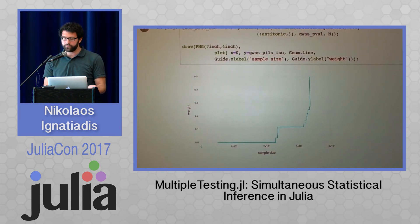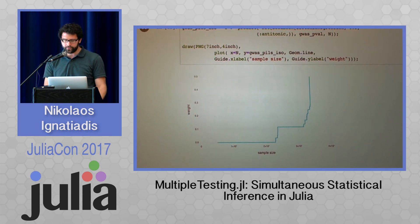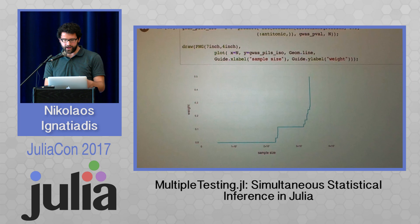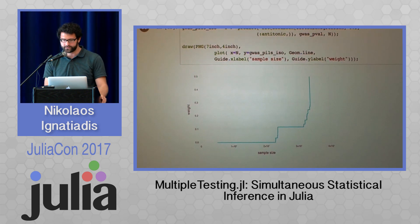For another example, here I used isotonic regression, which finds the best least squares fit subject to a monotonicity constraint. It's a fully non-parametric method up to this monotonicity assumption. Again, you can see the fit, and higher sample sizes get higher weight. In principle, because of Julia's rich type system, you could use whatever non-parametric regression method you'd like — trend filtering, smoothing splines, Gaussian processes, etc.